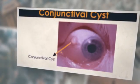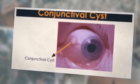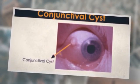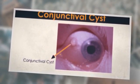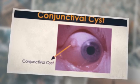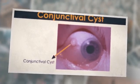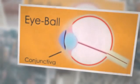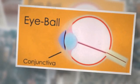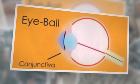Conjunctival cyst is an eye infection. This infection creates a sac or thin wall containing fluid. The vesicle or sac created by this infection could exist on the upper surface or below the conjunctiva surface. As this is related to the eye layer called the conjunctiva, that's why it is called a conjunctival cyst.